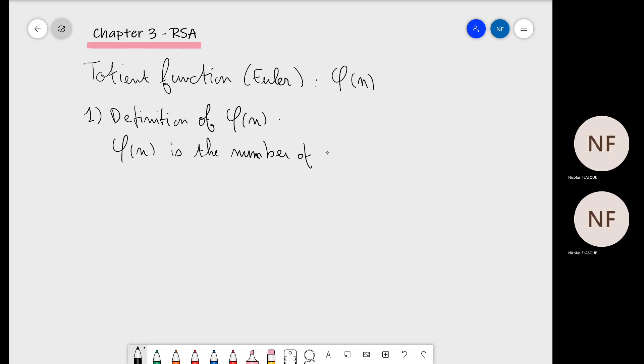Nevertheless, phi of n is the number of elements of Z over nZ which have an inverse.